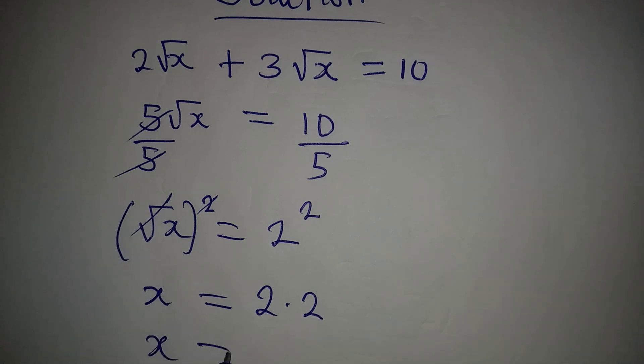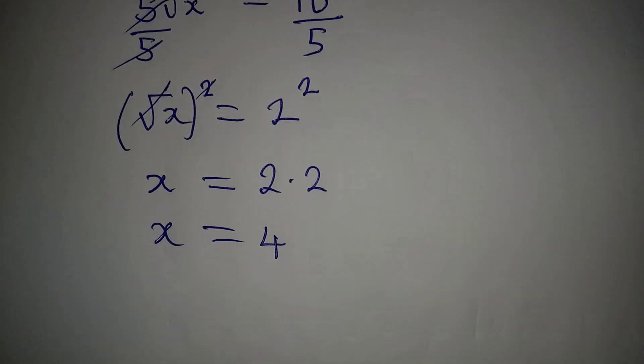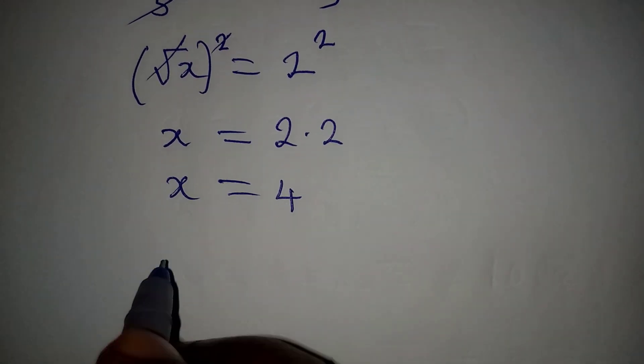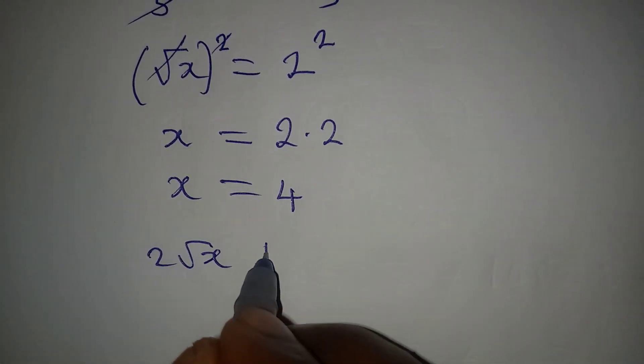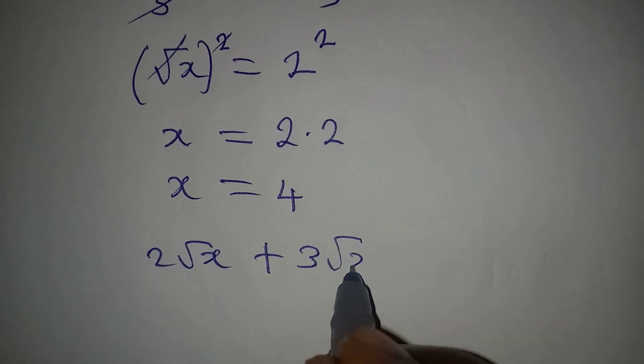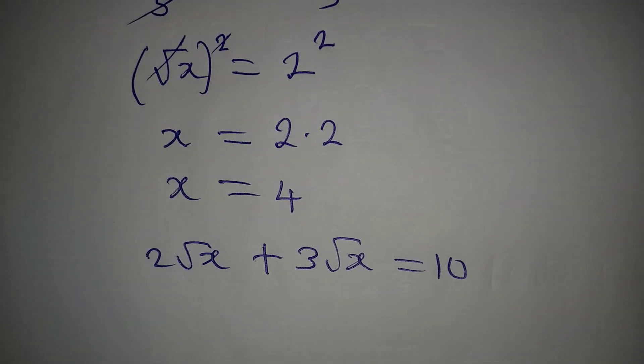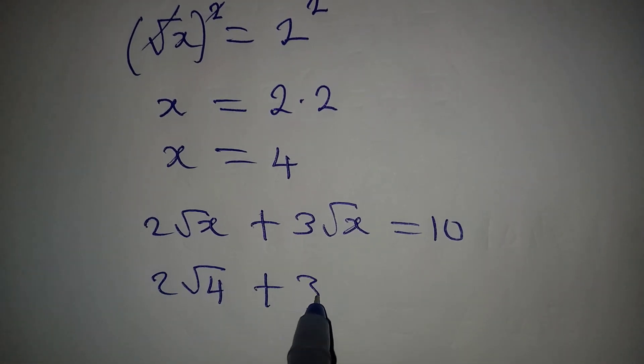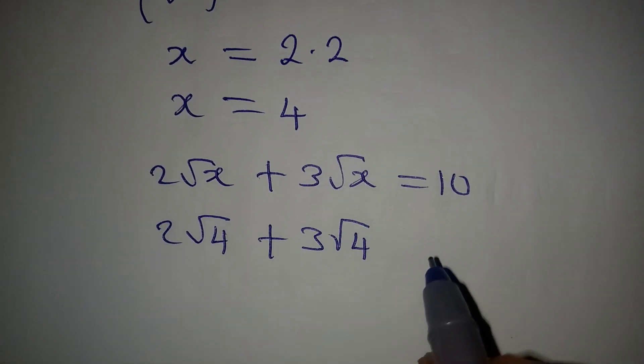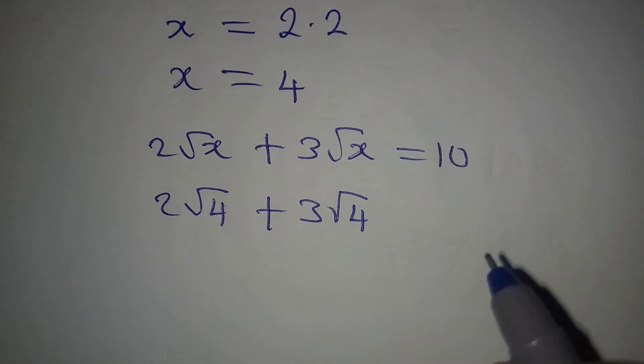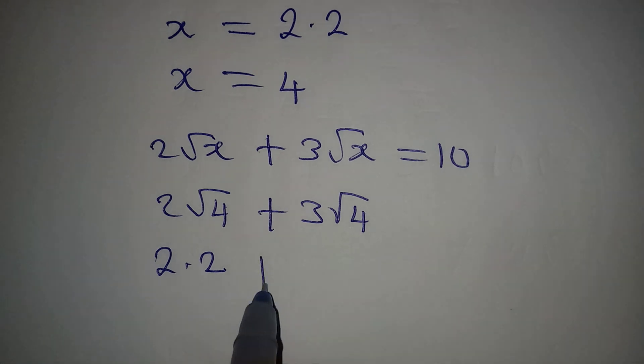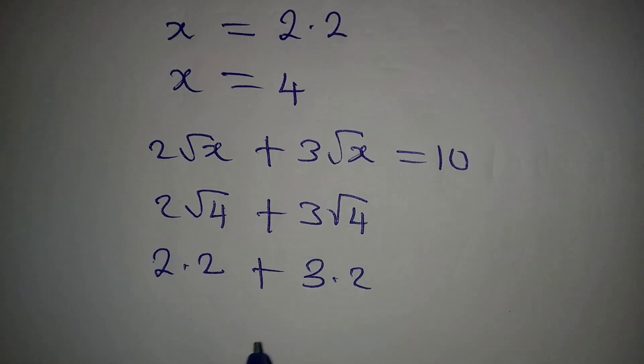Simple, isn't it? Okay, now let's confirm this. We have 2√x + 3√x = 10. Now we have 2√4 + 3√4. And then we want to look into this. This is 2 times 2 because square root of 4 is 2, plus 3 times 2 because square root of 4 is 2.